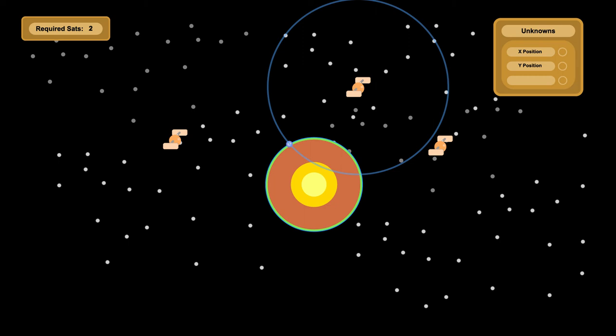A second satellite narrows it down. Let's say your phone calculates that you're 23,000 kilometers from the second satellite. That only leaves two possible places you could be, either here or here. And because you're not thousands of kilometers in outer space, you have to be here.